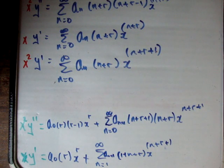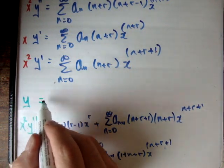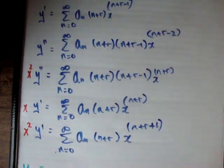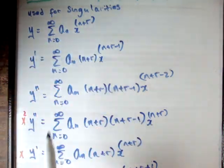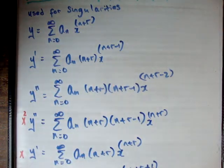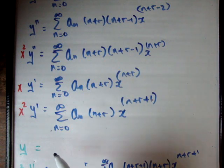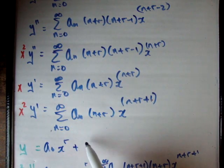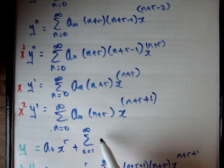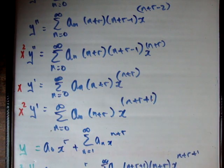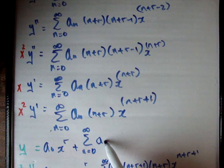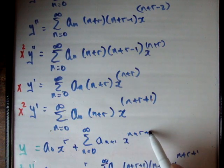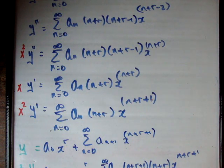The last thing we need to do is to shift y. y is the sum from n equals 0 to infinity of aₙ times x to the n plus r. Taking the first term, we get a₀ times x to the r, and then the remaining sum from n equal to 1 to infinity of aₙ times x to the n plus r. This is the exact same scenario as before, so we shift to get aₙ₊₁ times x to the n plus r plus 1, starting at n equal to 0.